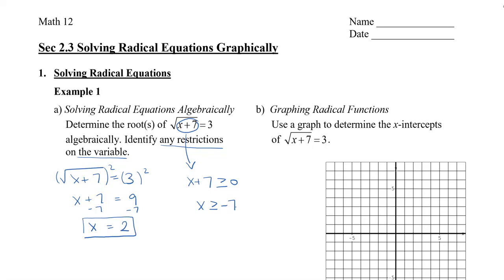Now let's compare this graphically. We have root x plus 7 equals 3. Before I graph, I want to move all the numbers to one side: root x plus 7 minus 3 equals 0. From this equation, my starting point uses negative 7, because that gives me 0 inside the radical, and then my y-value would be negative 3.